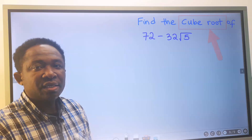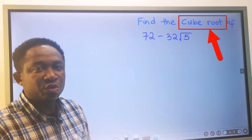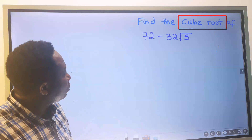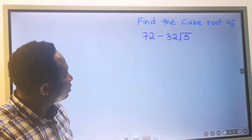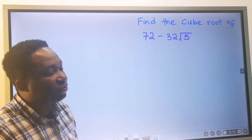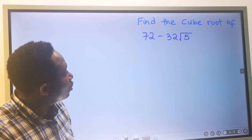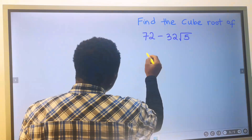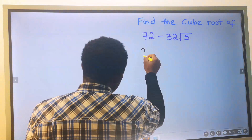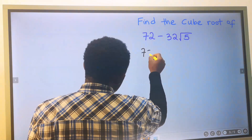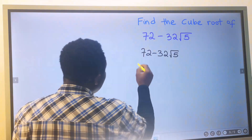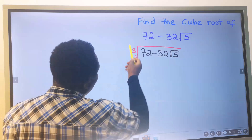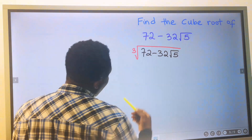Let's find the cube root of 72 minus 32 root 5. To solve this, step number 1: write out the given question and take the cube root according to the question.